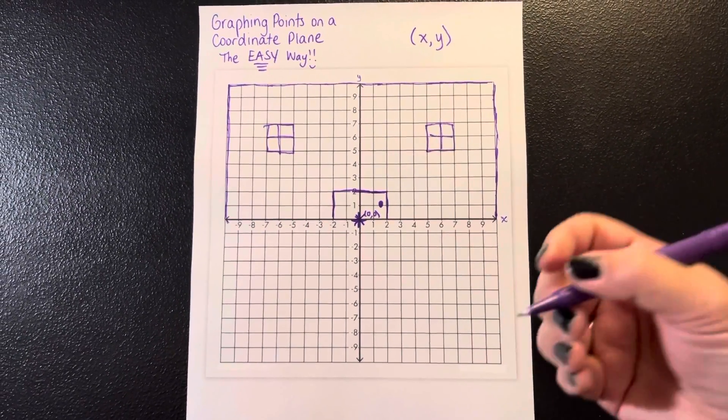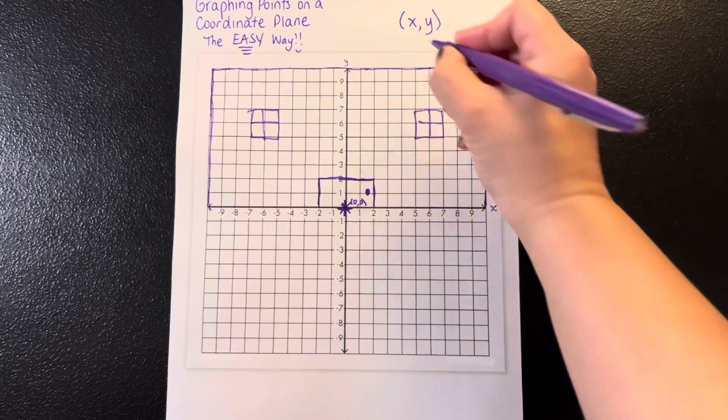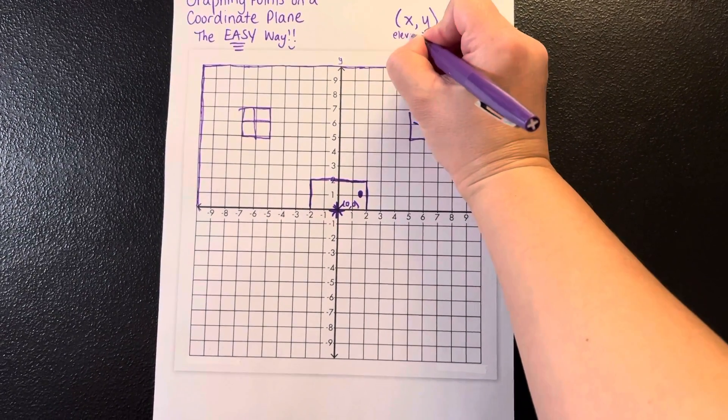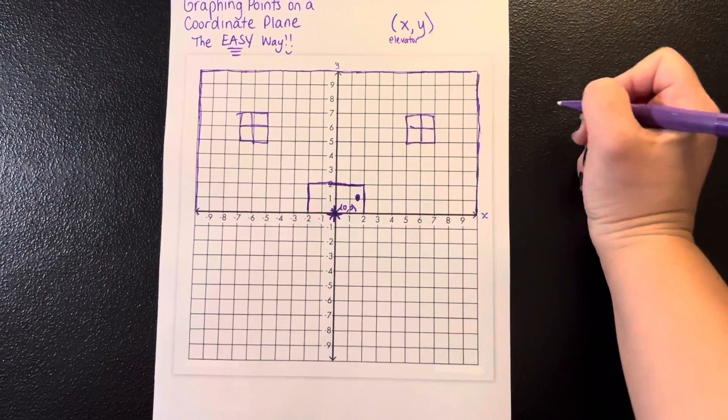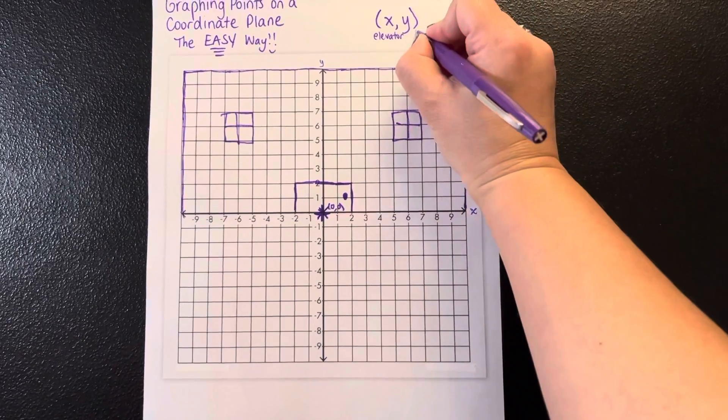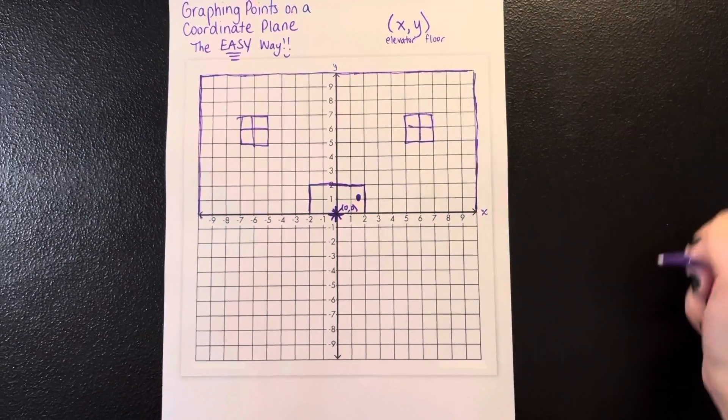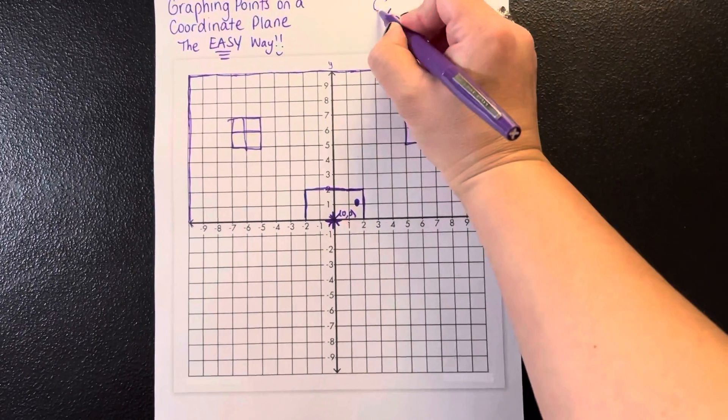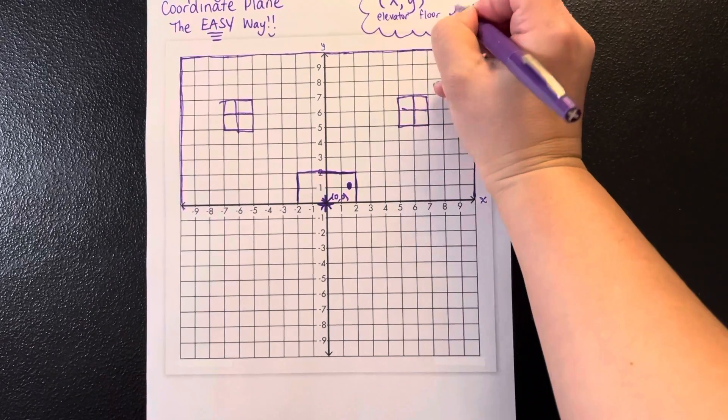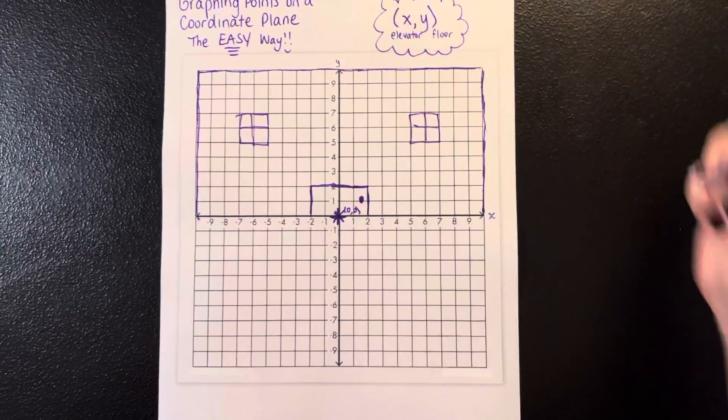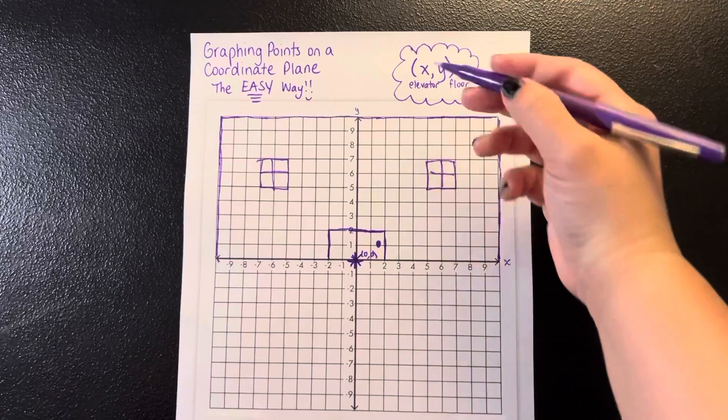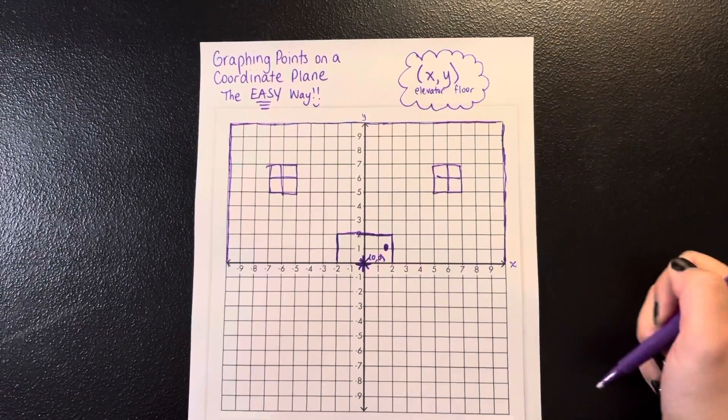Now, thinking of a building, when you walk inside, you always want to go to the elevator first or the staircase first, then the floor. And this is the main way, the main easy way to remember. First, you go to the elevator, then you go to the floor.